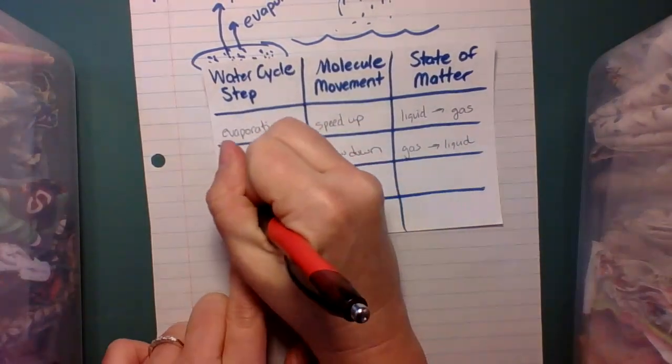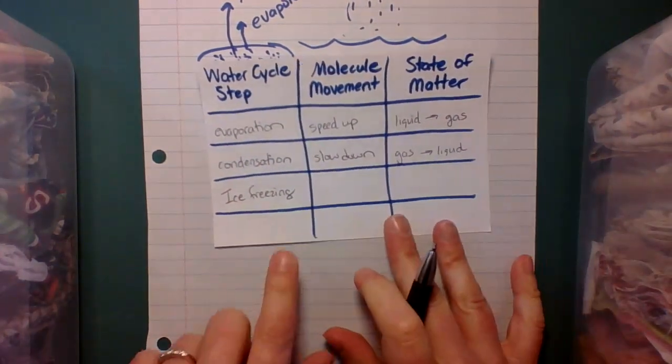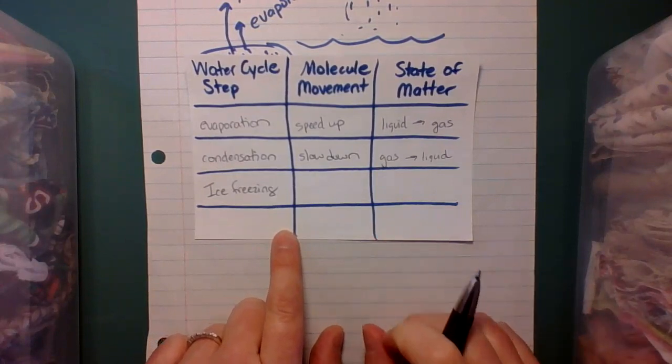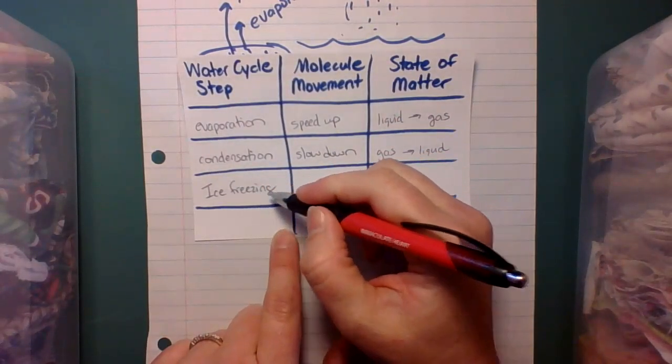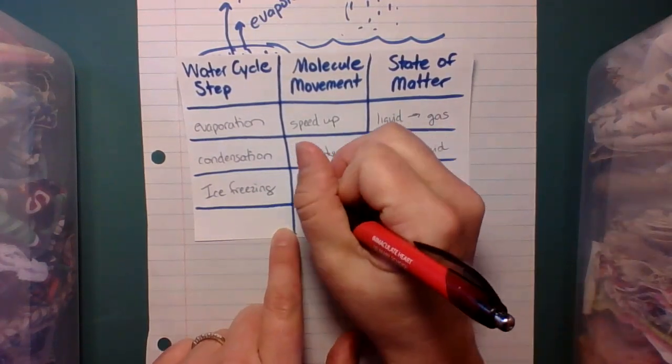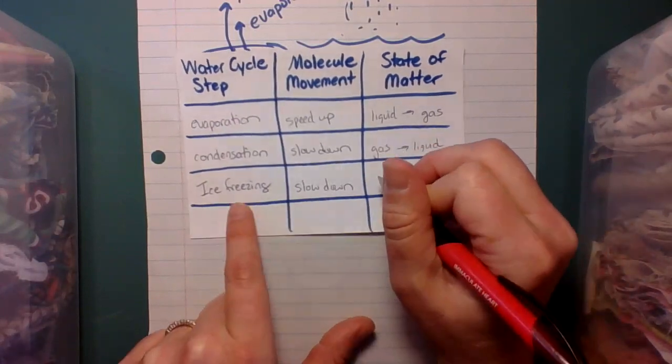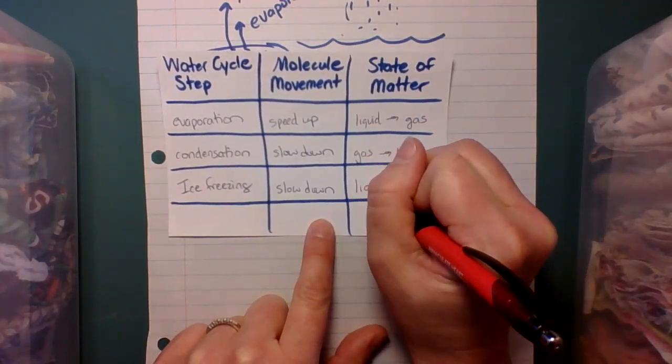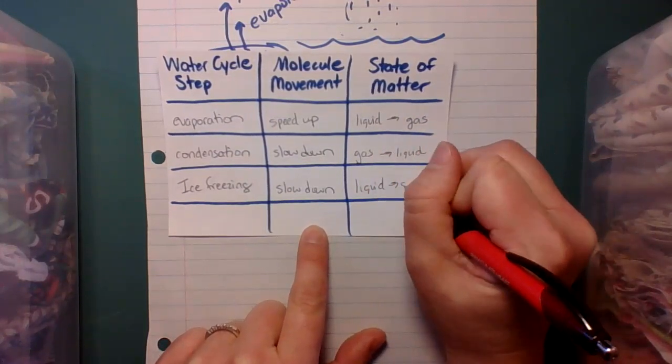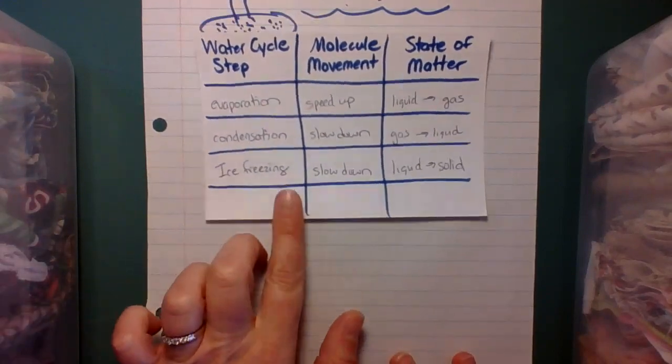We can think about ice freezing, especially in those colder climates, ice freezing, the formation of snow. We know that ice freezing, that's a liquid to a solid. So those molecules slow down. And ice freezing, think about making ice cubes in your freezer, you start with a liquid, and then a couple hours later, you end up with a solid.